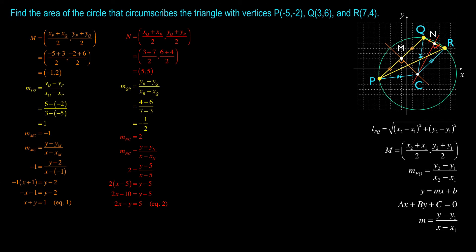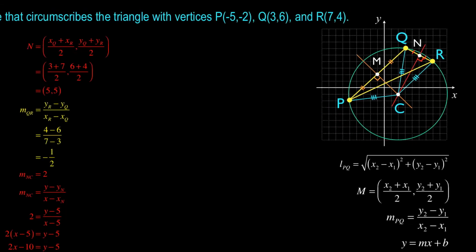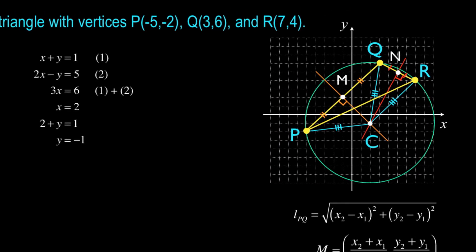At this point, it proceeds very much like what we did with finding the centroid as well as finding the area of the parallelogram. We have to find the point of intersection of these two lines so we can locate C. And so it goes like this. I write down my two equations, x + y = 1, 2x - y = 5.